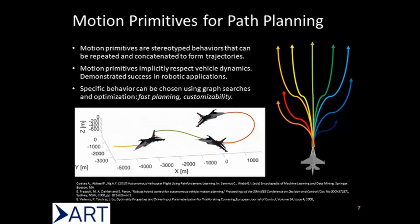Motion primitives are an effective way to simplify kinodynamic planning. They restrict the choice of actions to a discrete set, however in return they eliminate the need to solve dynamic constraints at runtime, allowing for faster planning. This is also good for aggressive behaviors which may push the limits of the vehicle's capabilities.